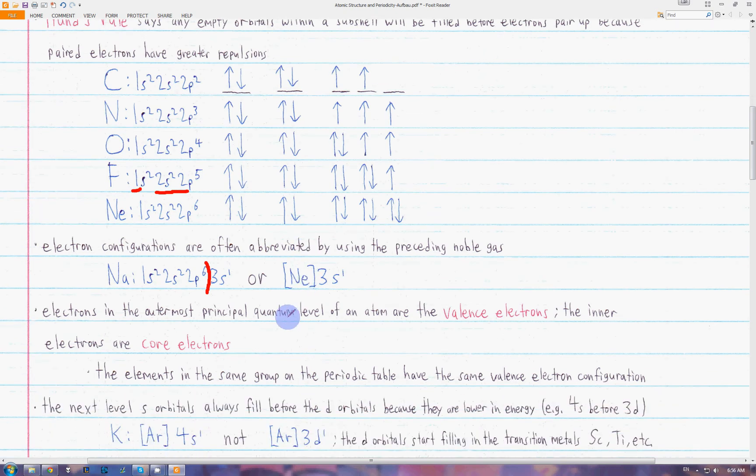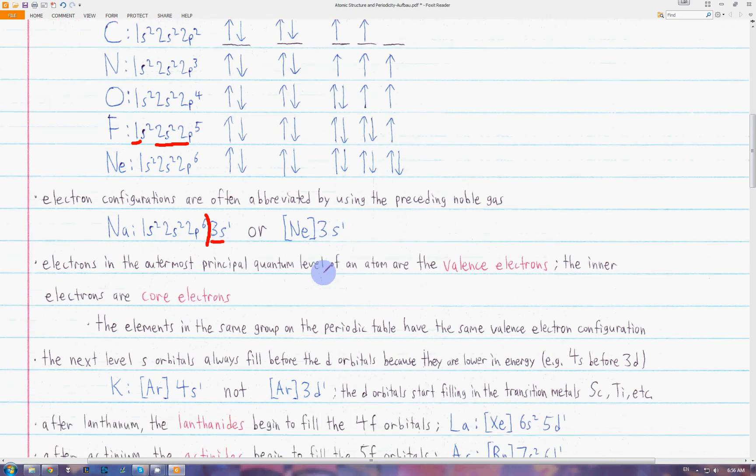Elements in the same group, which are the vertical columns in the periodic table, all have the same valence electron configuration. For example, sodium has 1 valence electron in the 3s subshell. Potassium will also have 1 valence electron in the s subshell, but it will be in the 4s subshell, not the 3s.